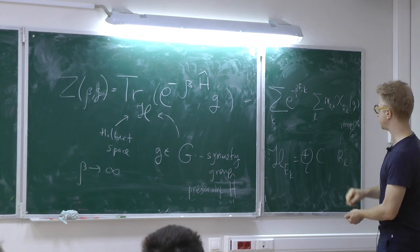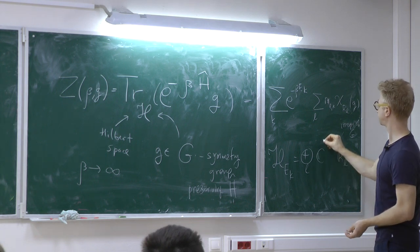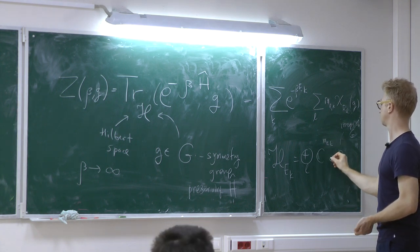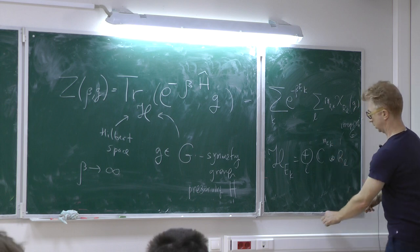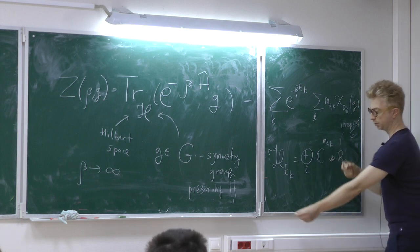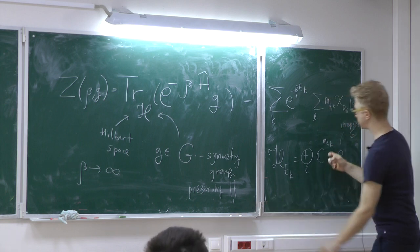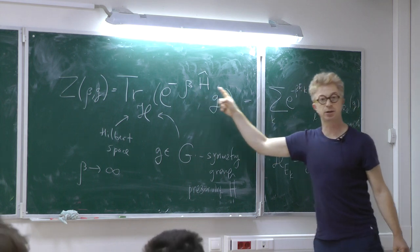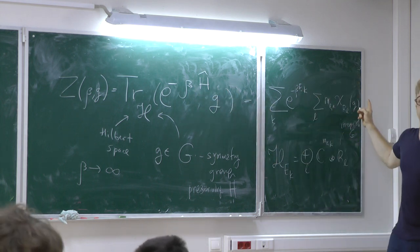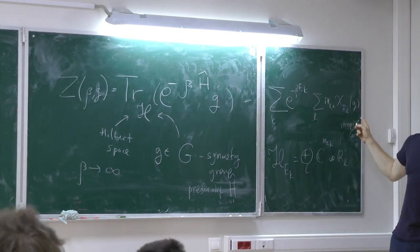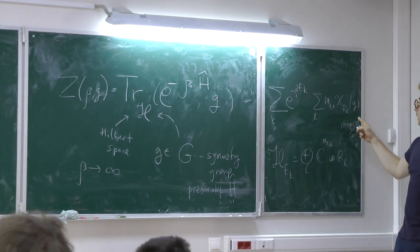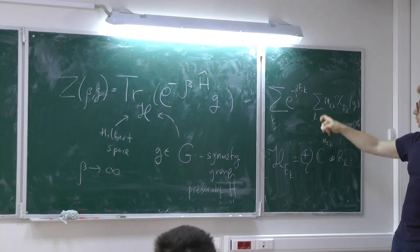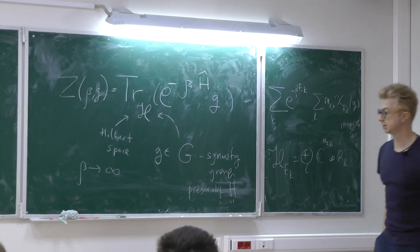To know these multiplicities, you look at this function, and then, if you like, you can make a Fourier transform on the group, convoluting with the character to extract the multiplicity.